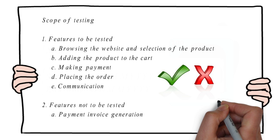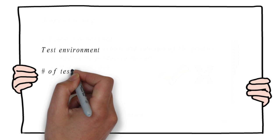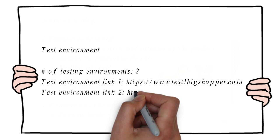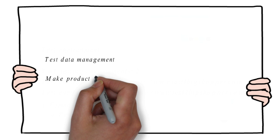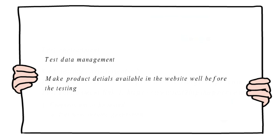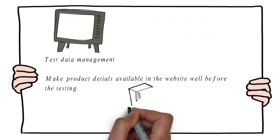There can be different systems that integrate with the main system. For example, in our scenario, a different system is used for payment invoice processing, so we consider this as not to be tested in our project — it can be listed under the features not to be tested section. The next component is test environment details. In our case, we have two environments for testing and the website address needs to be given. The next component is test data management. For testing, test data is required — for example, product details like televisions, refrigerators, or ACs should be available in the test environment, either by uploading or manually creating them.